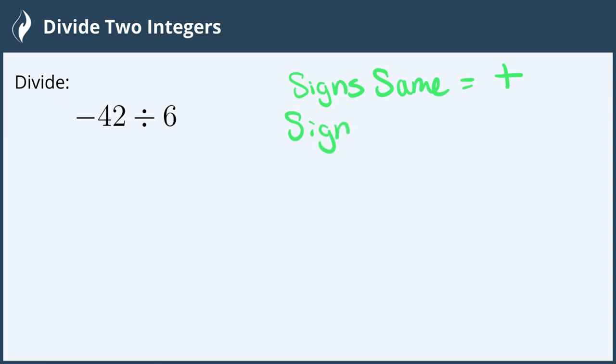If the signs are different, then the answer will be negative. This rule is the same whether you multiply or divide.